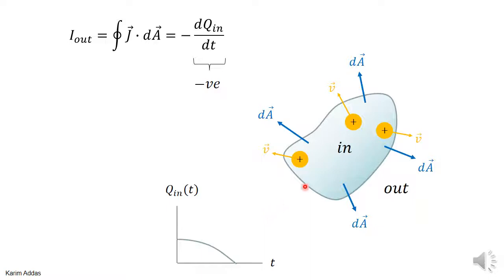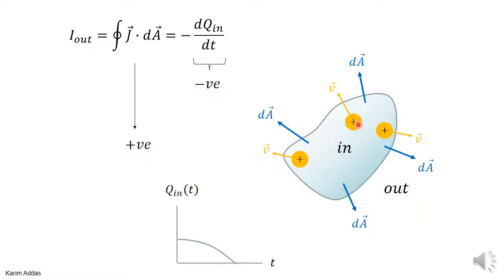Let's give an intuitive example. If you have positive charges inside the volume moving with a velocity that causes them to exit the volume, then if you plot Q_in as a function of time, it is initially positive but gets less positive with time. That means dQ_in/dt is negative. Negative times negative is positive, so the integral of j·dA is positive. This makes sense because for positive charges the j vector is in the same direction as the velocity, so j dotted into the area is positive everywhere on the surface — giving a positive outward current.